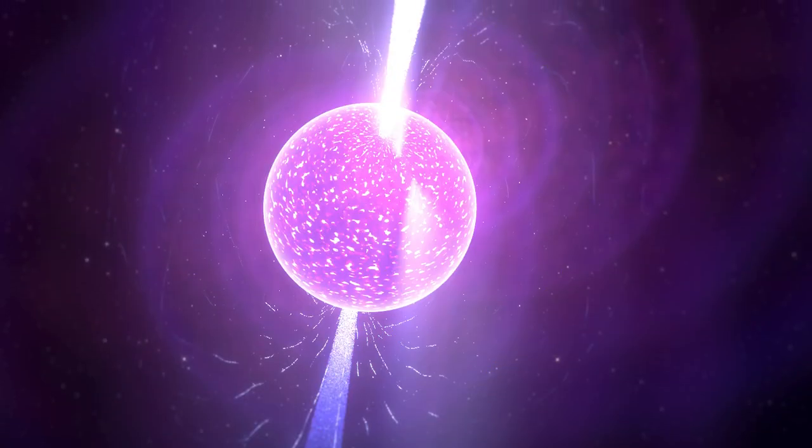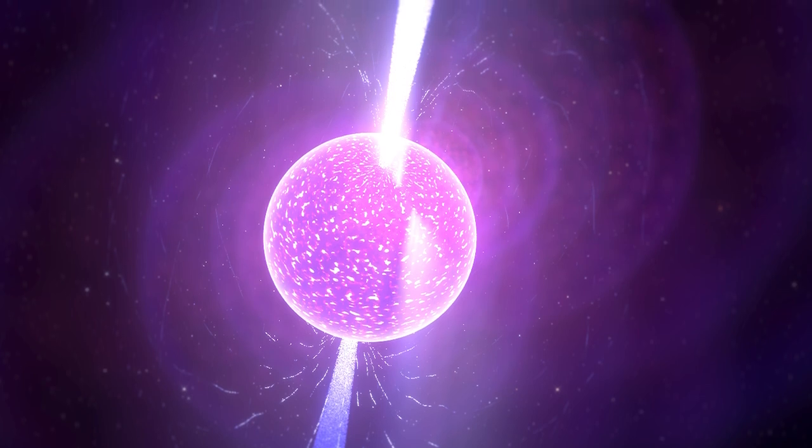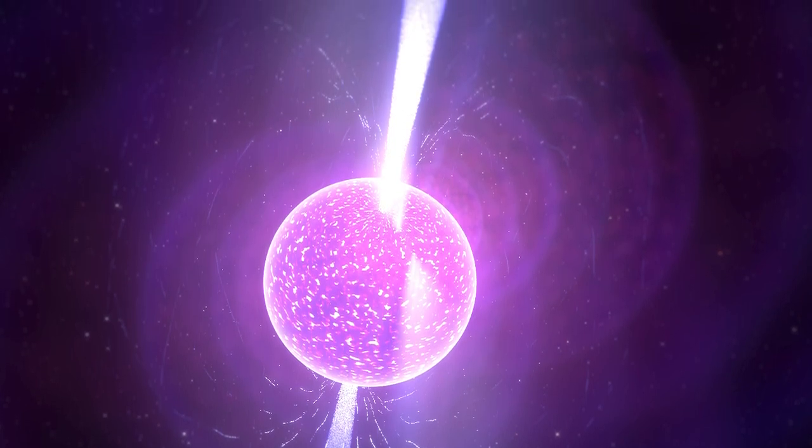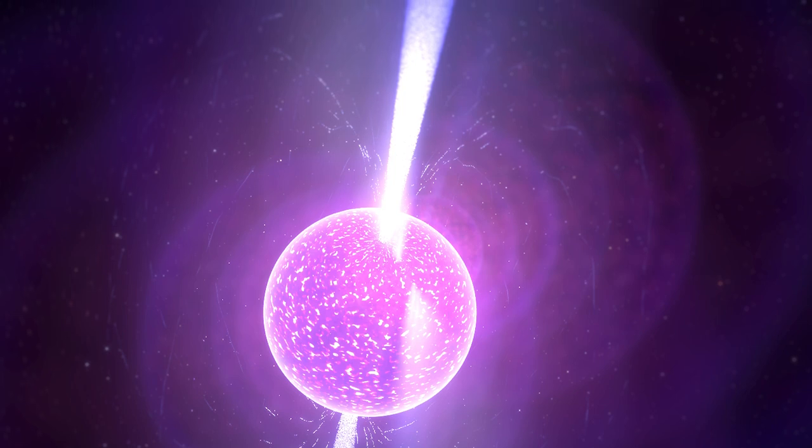While neutron stars might be worthy of their own entry on this list, there is one object they're related to that definitely supersedes them in terms of sheer terrifying power. As if the properties of a neutron star weren't metal enough, every once in a while two neutron stars end up revolving around one another and smashing together, creating a kilonova, one of the brightest and most energetic types of explosions in the universe.